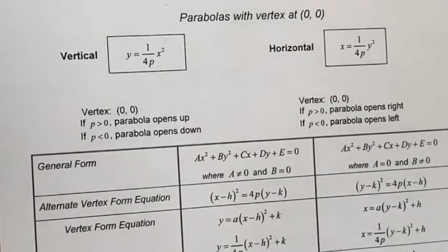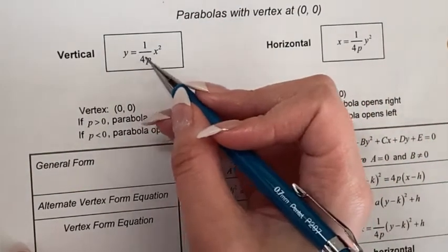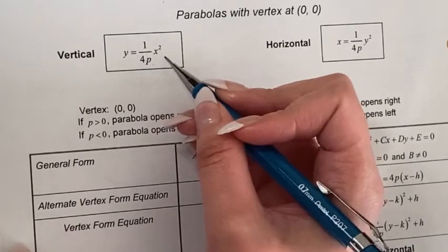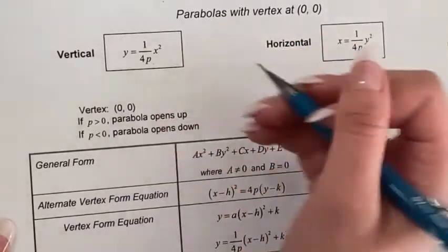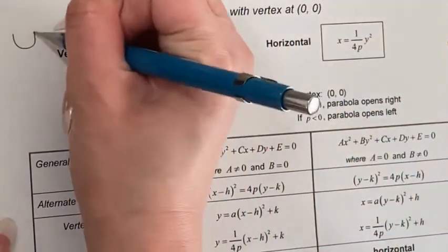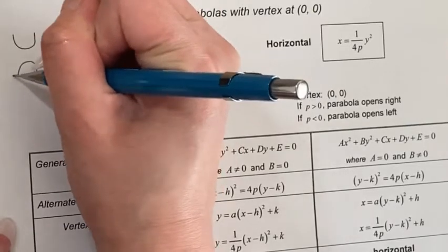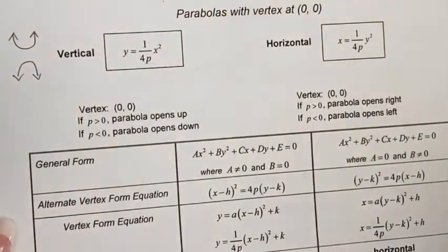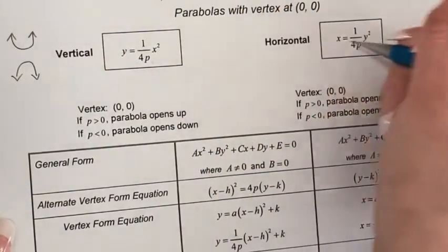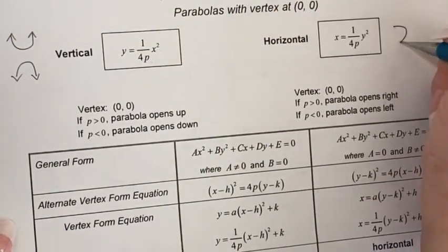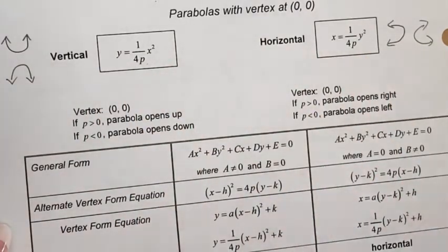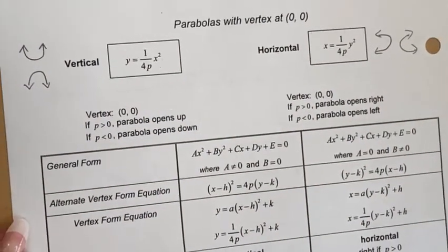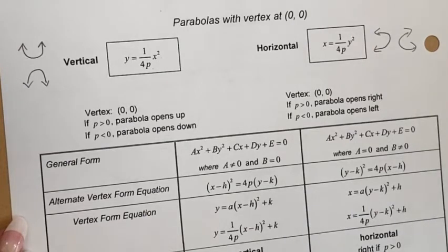Parabolas with vertex at (0, 0) come in two orientations. The vertical form is y = (1/4p)x², where the parabola opens up or down. The horizontal form means the parabola faces sideways. You can see the clear difference between the two orientations.